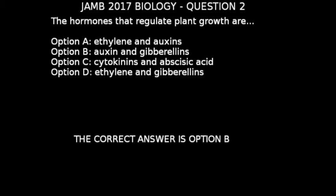Option D is also not correct because ethylene is not a plant growth hormone, while gibberellins is a plant growth hormone. So the correct answer is Option B — auxin and gibberellins.